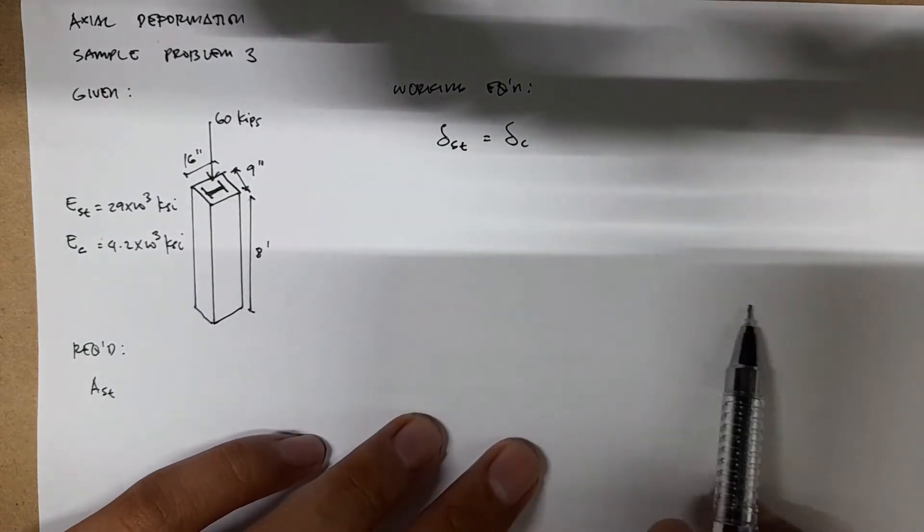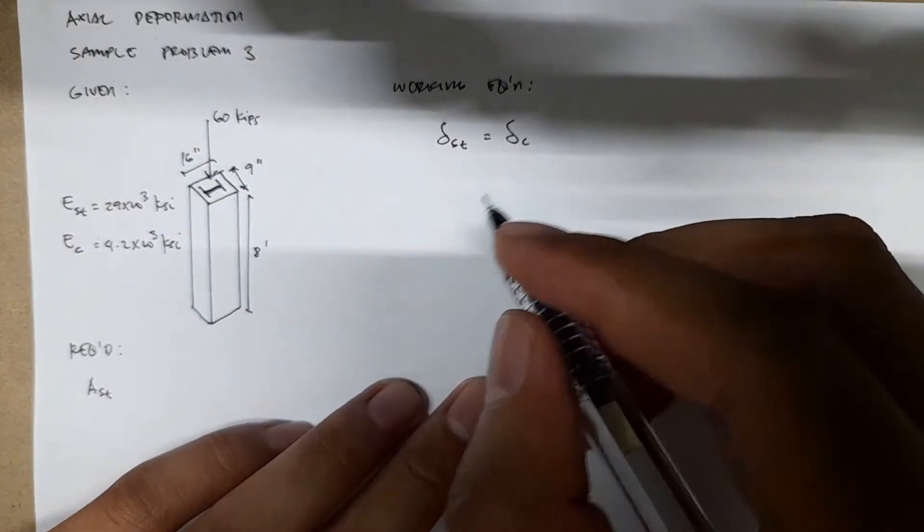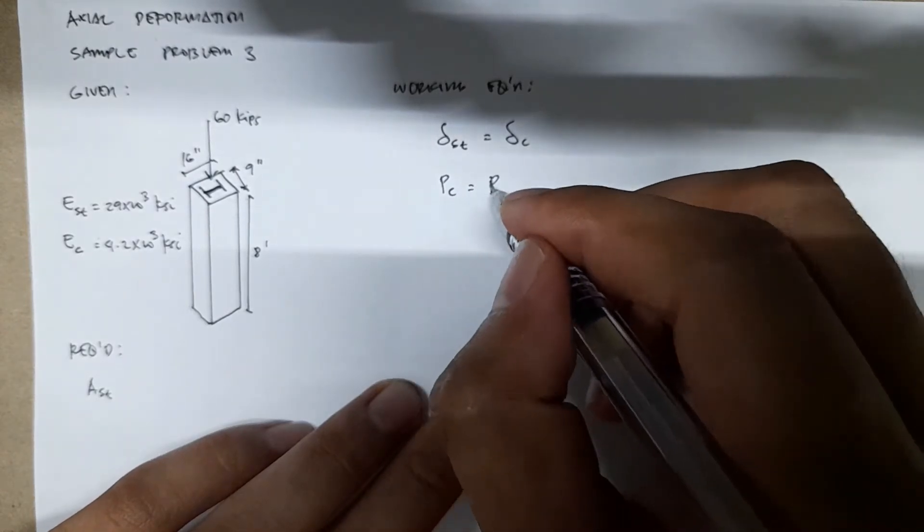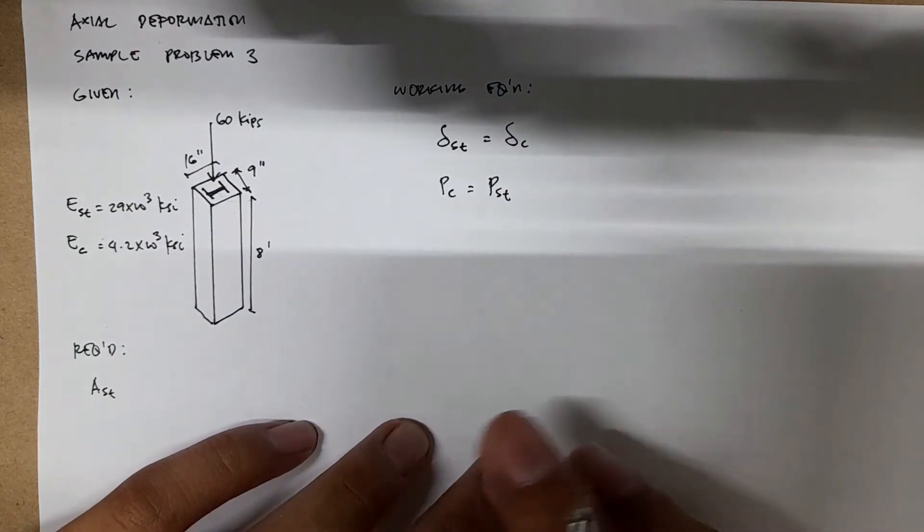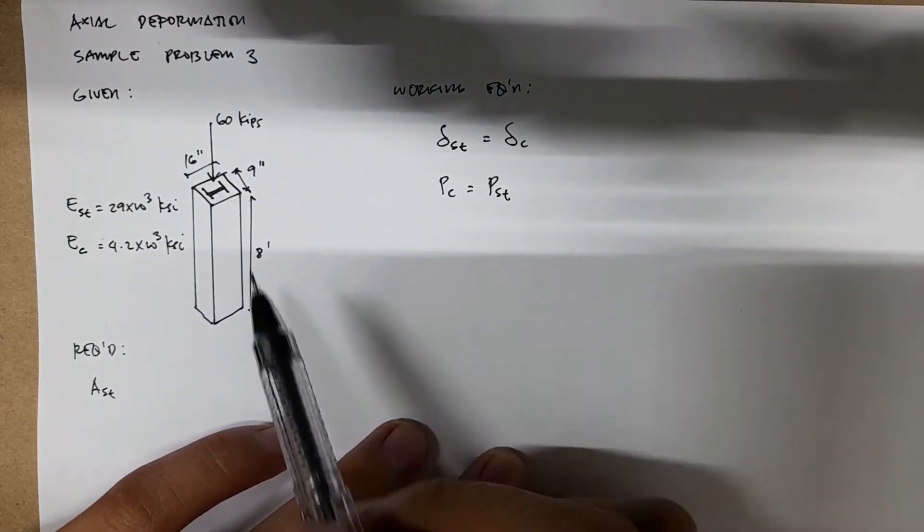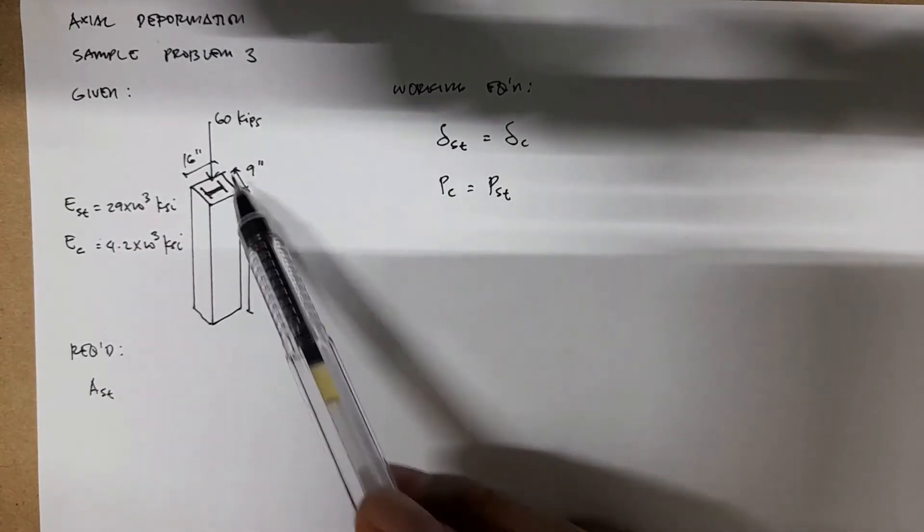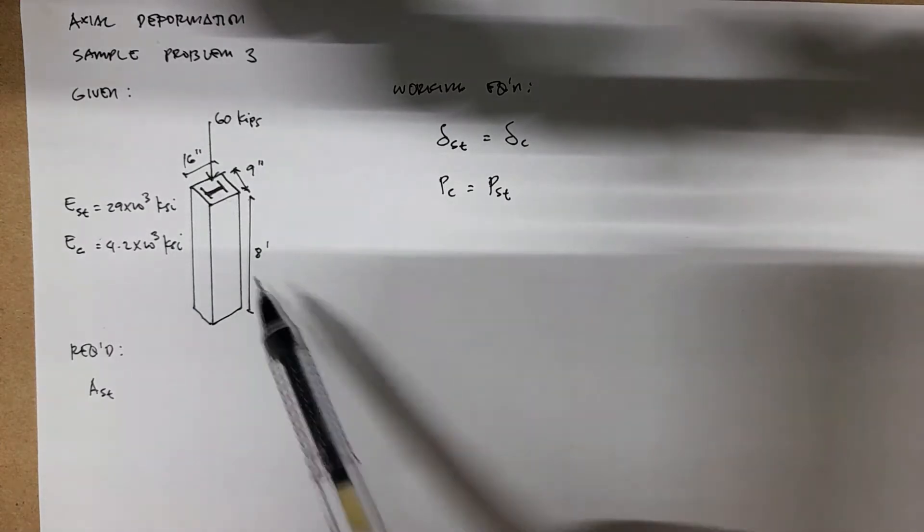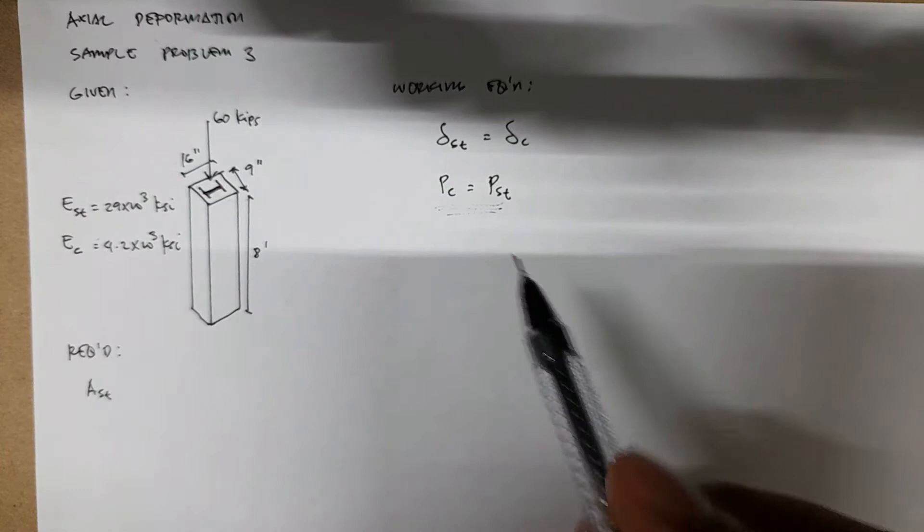We also have another equation: Pc equals Pst. The problem states that you need to find Ast so that the forces or the vertical loading is equally shared between the concrete and the steel.